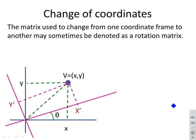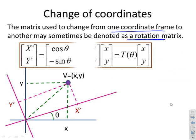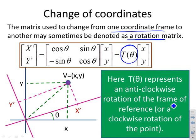The matrix can be used to change from one coordinate frame to another, so it's often defined as a rotation matrix. The link between x prime y prime and x and y is given by this matrix T of theta. Here T of theta represented an anti-clockwise rotation of the frame of reference.